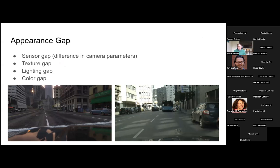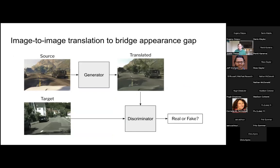The content gap is typically hard to bridge because we need access to the synthetic data rendering pipeline and a model of the real data content distribution. But we can use image-to-image translation methods to bridge the appearance gap. The typical approach uses GAN-based methods where we train a generator network to translate source images to look more like real images while preserving content, using a discriminator trained to distinguish real from generated images, and back-propagating to the generator so it better fools the discriminator.